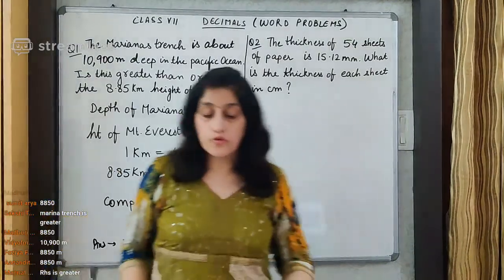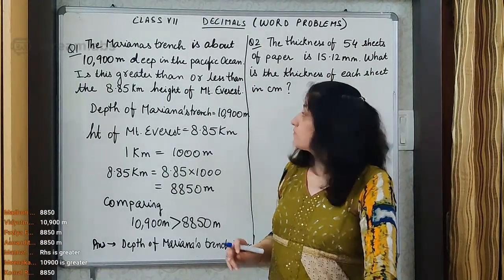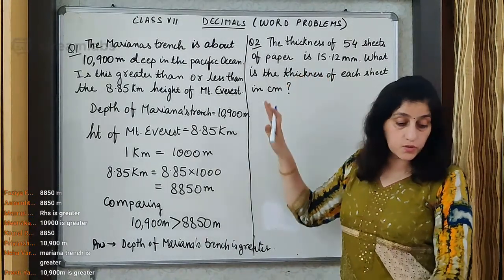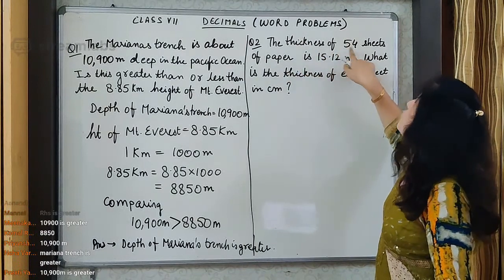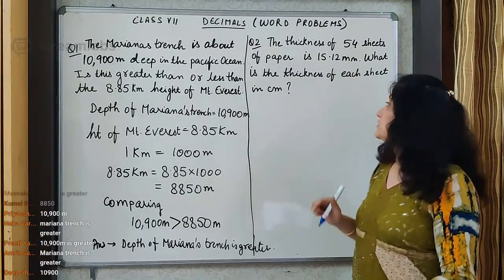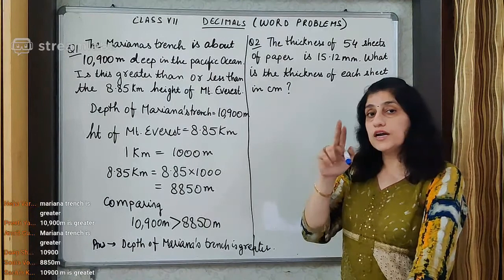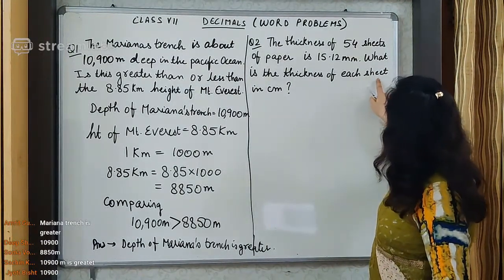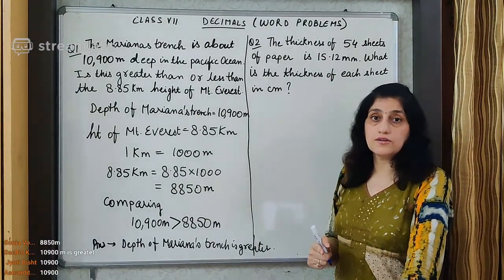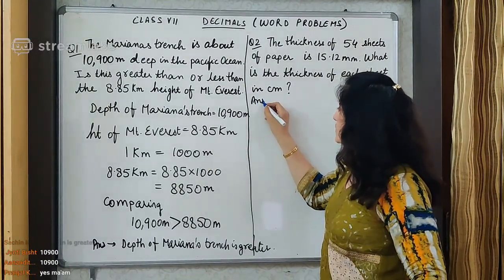I hope this is clear. Then we will move on to the second question. The thickness of 54 sheets of paper is 15.12 millimeter. What is the thickness of each sheet in centimeter? There are two parts to this question. First we have to find the thickness of each sheet and then return the answer in centimeter. So first let's record what information is given to us.